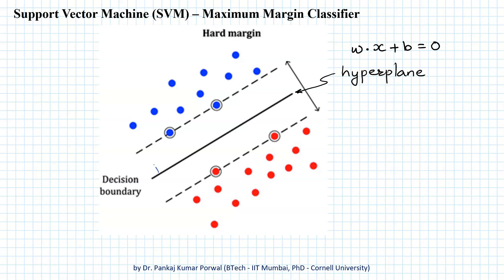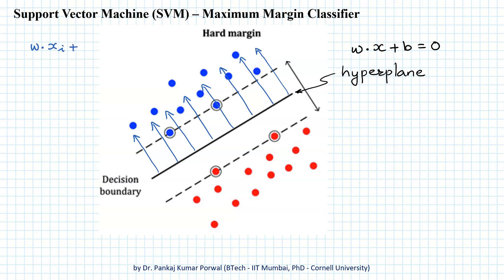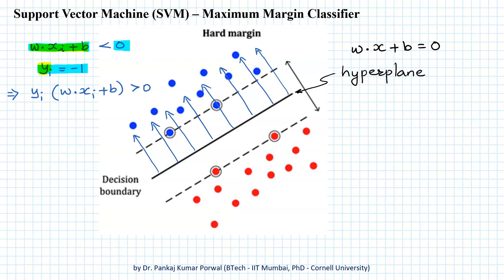Let's say for the blue side of the hyperplane the value of the expression is negative. Then for every point belonging to the blue class, the value of w dot xi plus b will be less than zero. I will assign the class label for the blue class as minus one. If I multiply yi with w dot xi plus b, the product will be positive, because both w dot xi plus b and yi are negative — the product of two negative numbers is always positive.